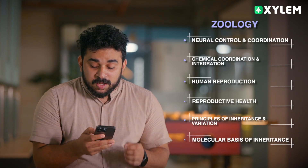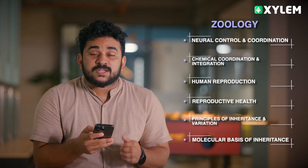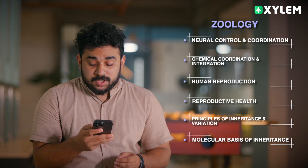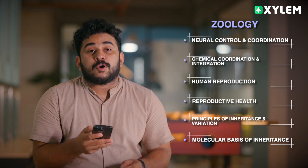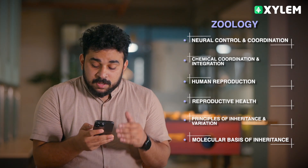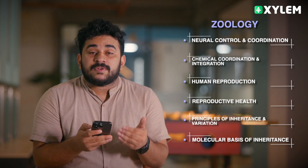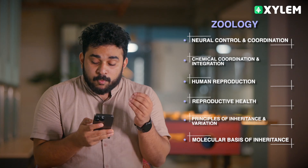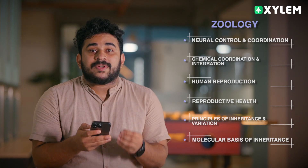Then, Zoology — beginning chapters: Neural Control and Coordination, Chemical Coordination and Integration, Human Reproduction, Reproductive Health, Principles of Inheritance and Variation, and Molecular Basis of Inheritance.